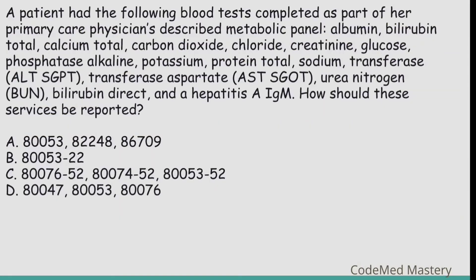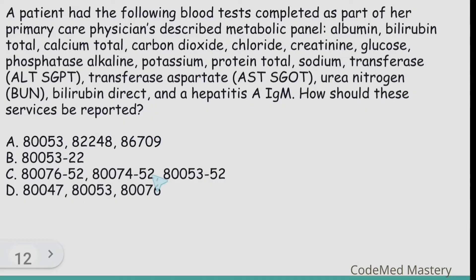Let us solve another question. A patient had the following blood tests completed as part of their primary care physician's described metabolic panel: albumin, bilirubin total, calcium total, carbon dioxide, chloride, creatinine, glucose, phosphatase alkaline, potassium, protein total, sodium, transferase ALT-SGPT, transferase aspartate, urea nitrogen, bilirubin direct, and hepatitis A IgM. When you look at the options, option C mentions modifier 52 — but we should not use modifier 52 with organ or disease oriented panel codes, so eliminate option C.